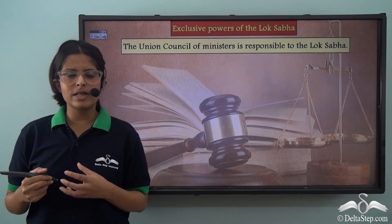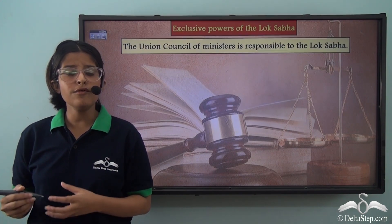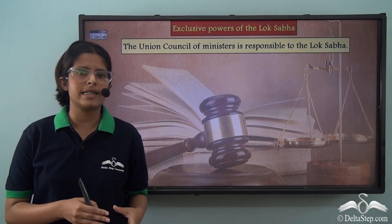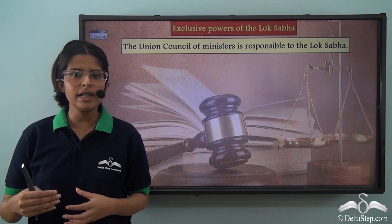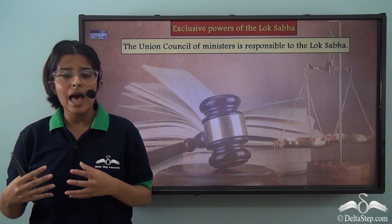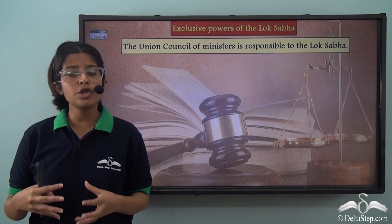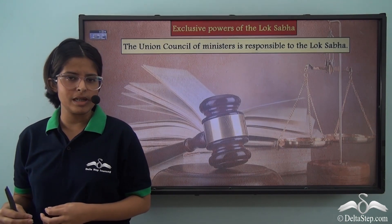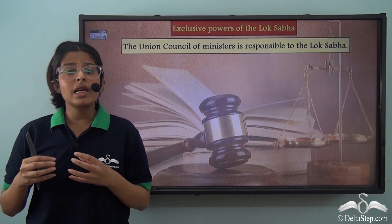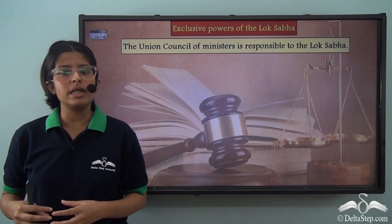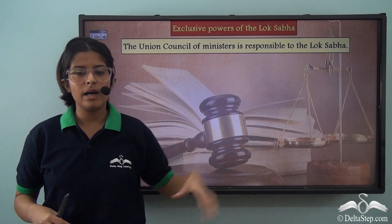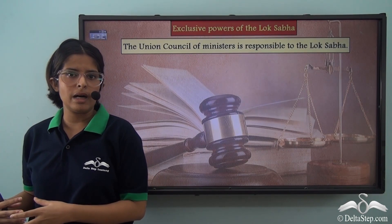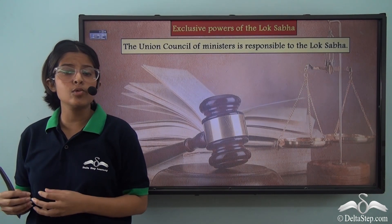In a parliamentary system, the executive is responsible to the legislature. The Parliament has the right to ask questions and pass motions which can affect the present government. But the Council of Ministers is responsible to the Lok Sabha and not the Rajya Sabha. So this is an exclusive function of the Lok Sabha.